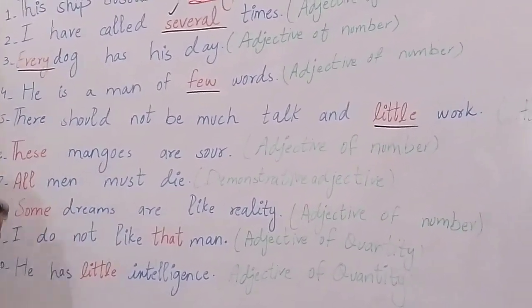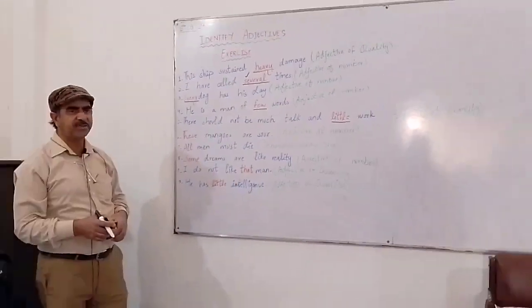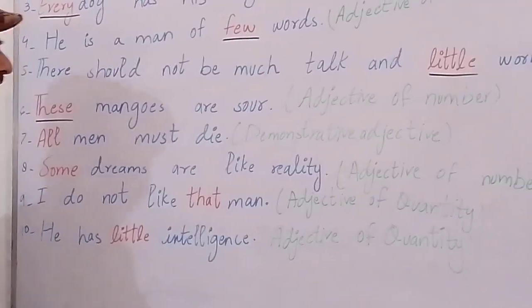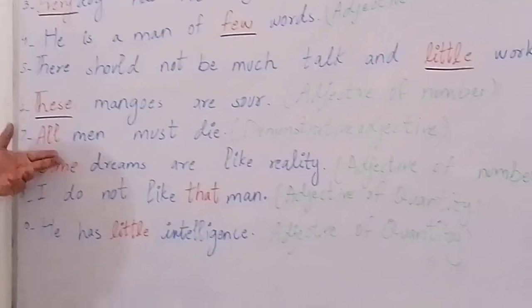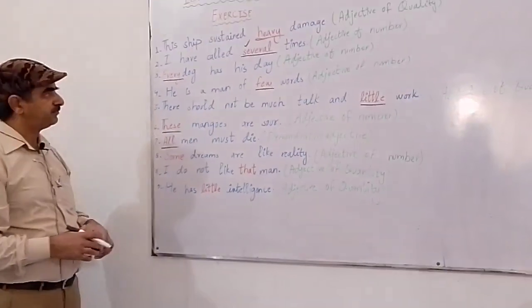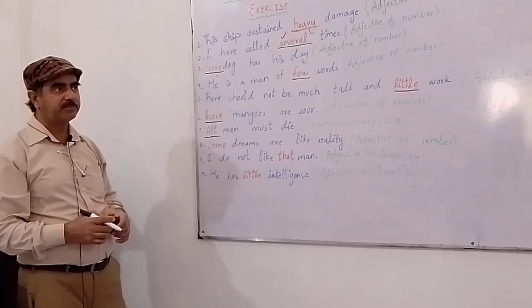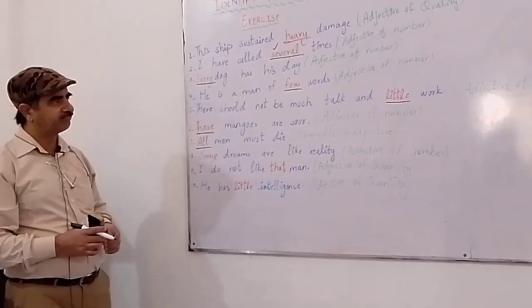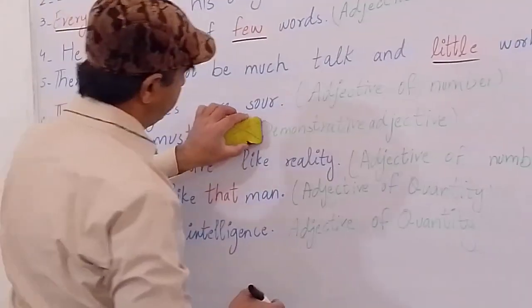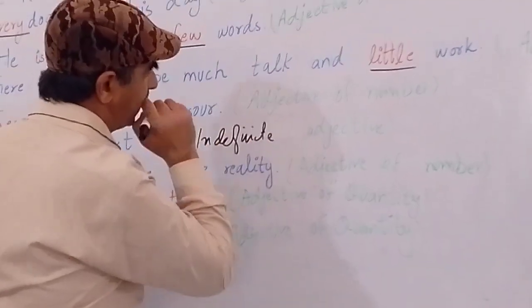Next one, these mangoes are sour. These mangoes are sour. And why is the adjective number? Again it is sharing the numbers, yes it is sharing the numbers clear. That's the reason, these mangoes mean so many mangoes, clear. All men must die. All men must die.